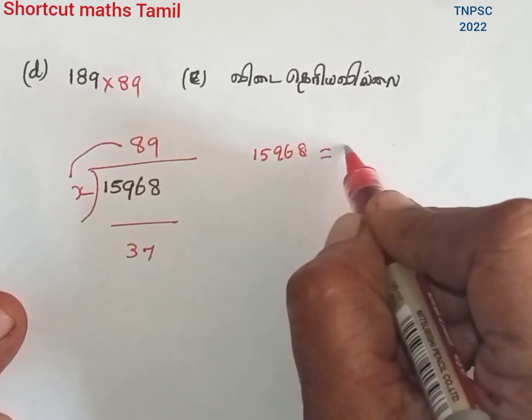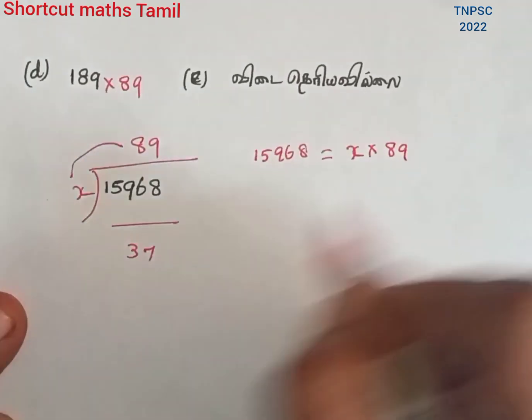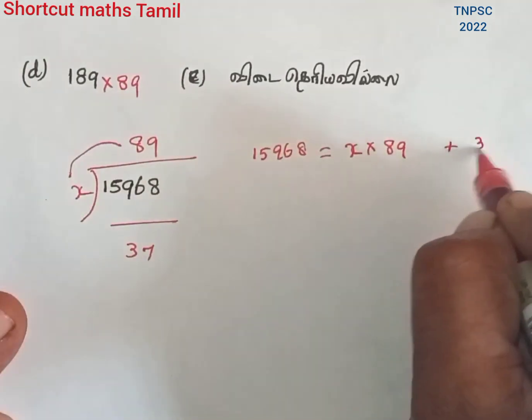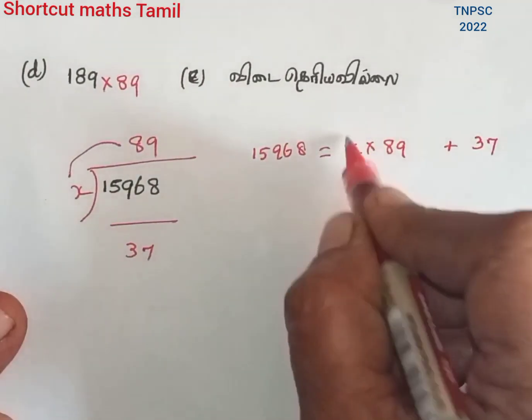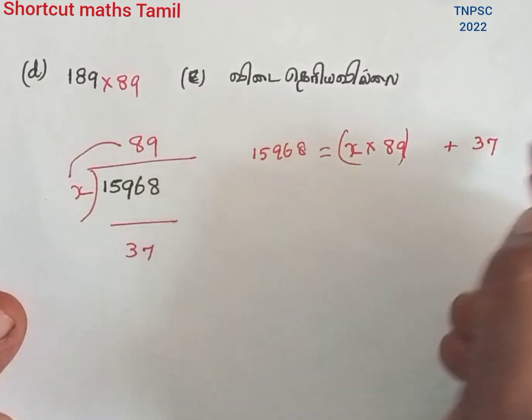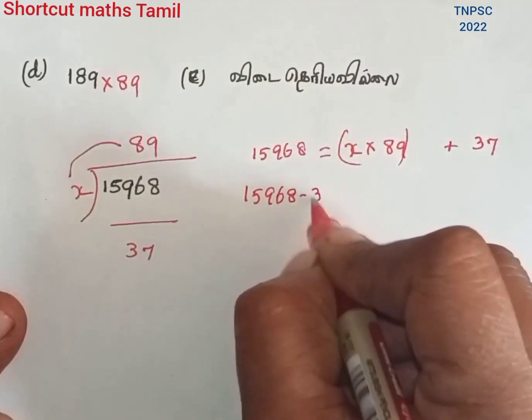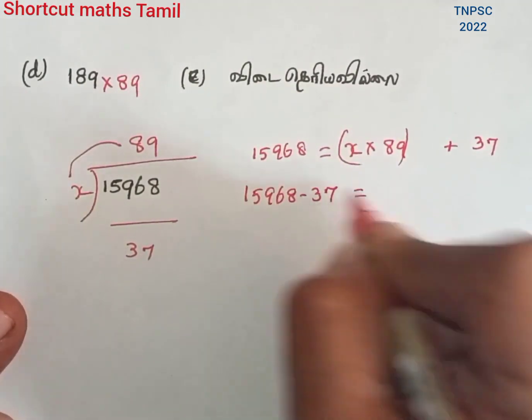Then x into 81. Add this number. Now we will set this number. Then minus 87.